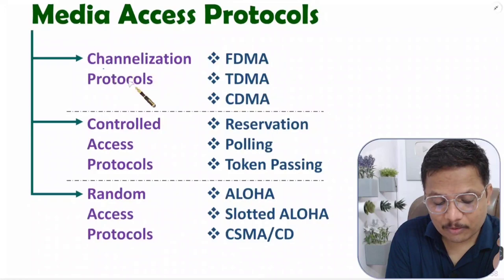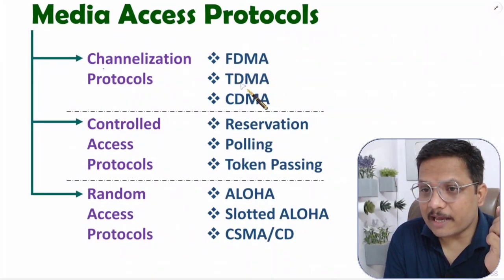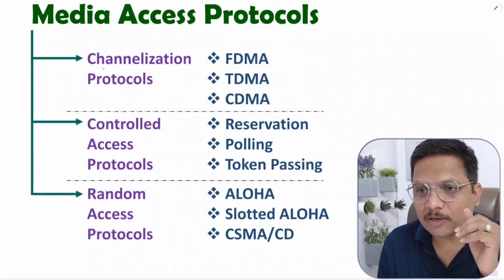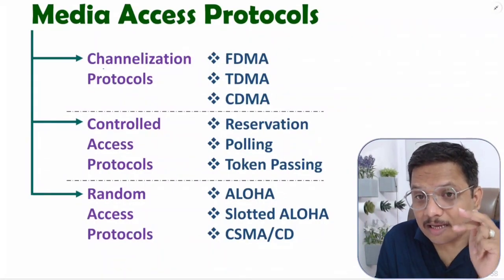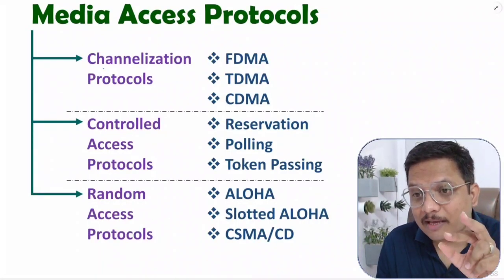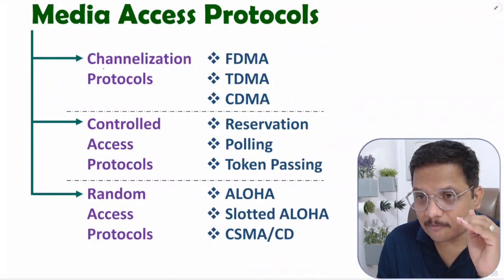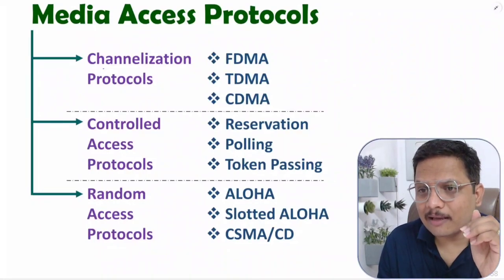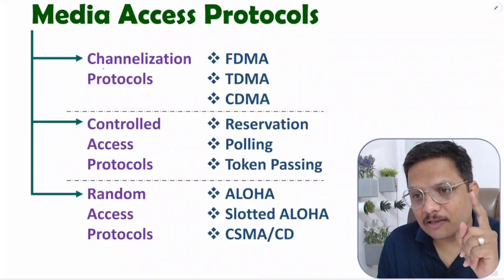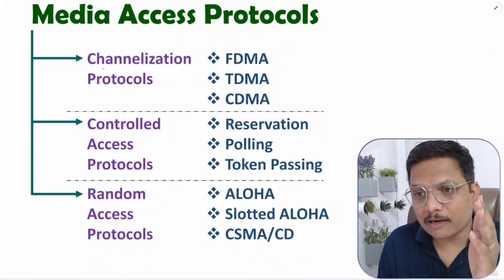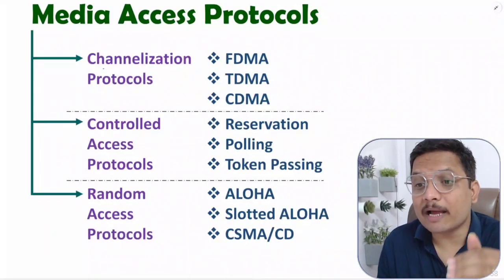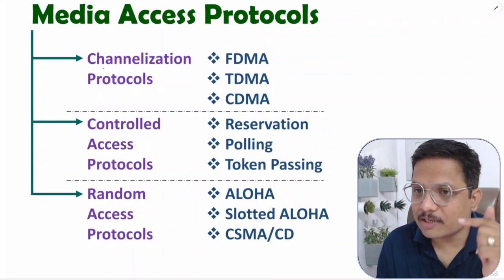In channelization protocols you'll observe FDMA, TDMA, and CDMA. Channelization means users are using channels — the question is how that channelization is done. In FDMA, channelization is done based on frequency, so every channel has a well-defined operating frequency: channel one has frequency f1, channel two has f2, channel three has f3. Users operate on channels that are separated by frequency, so multiple access happens based on frequency.